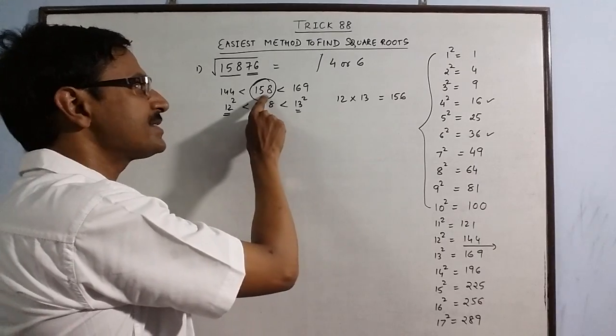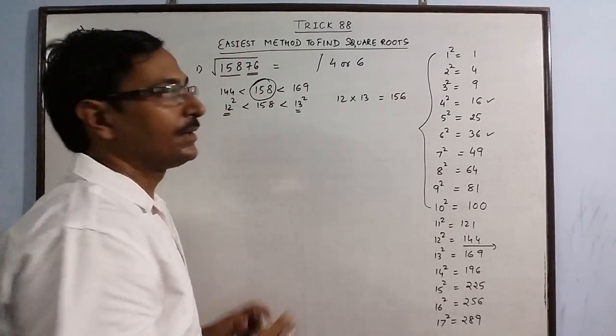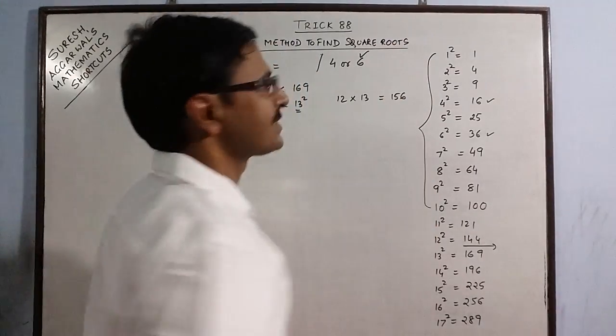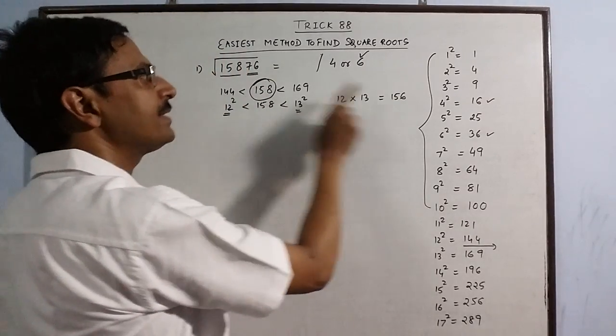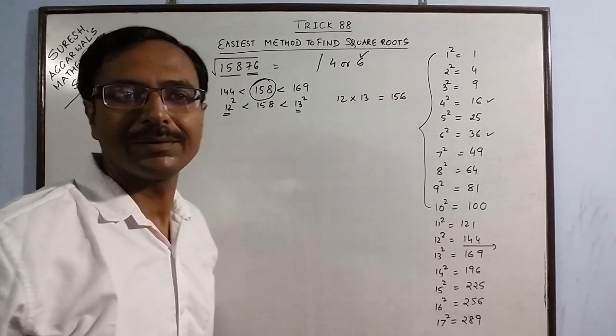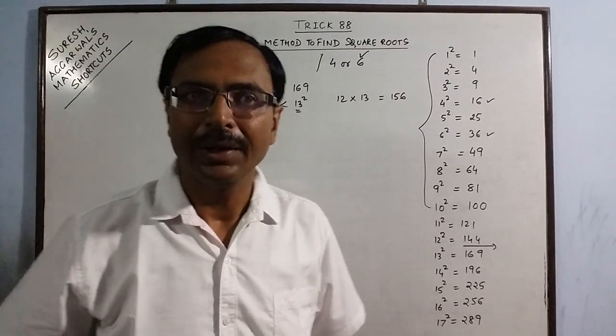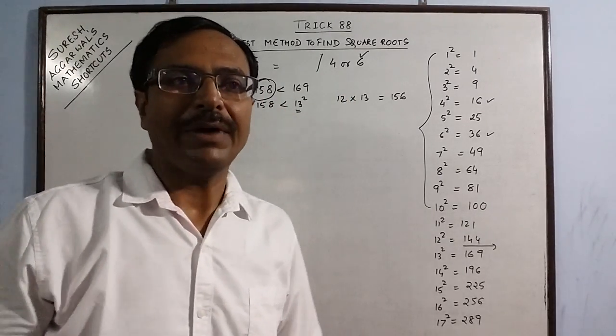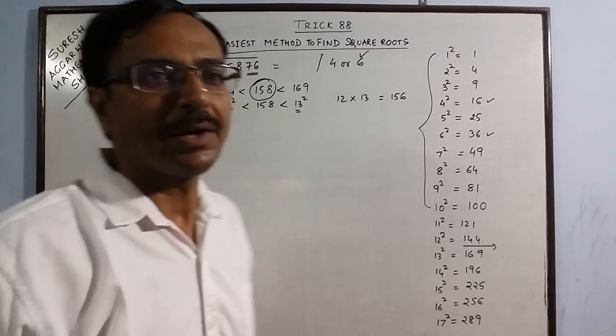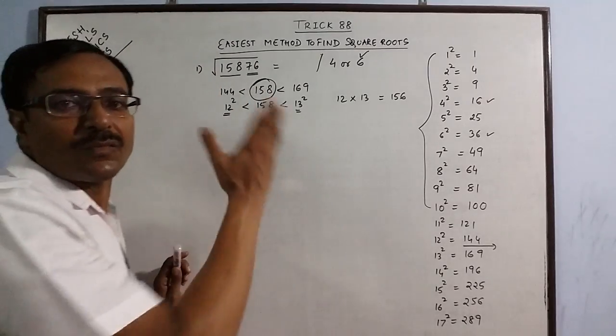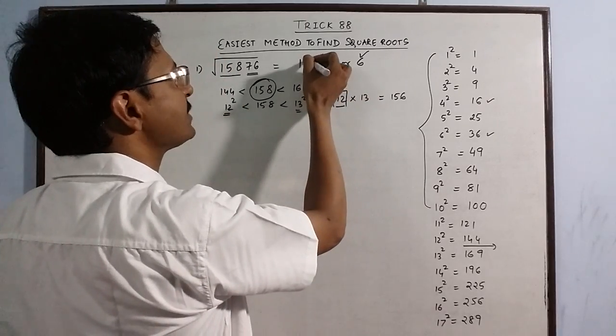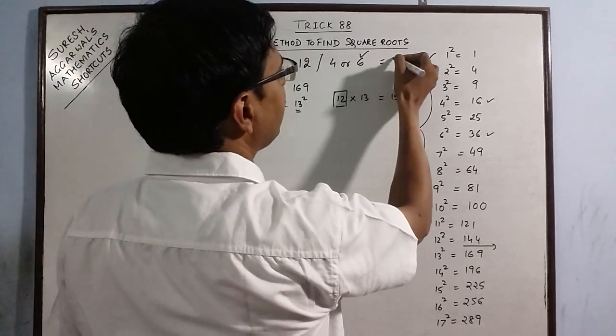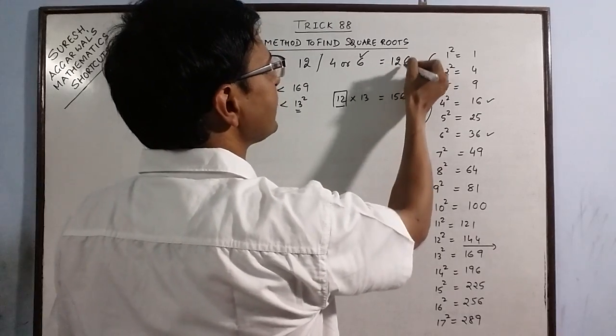So if this number is greater than this product, then you take the greater number 6. If this number is smaller than this, then you take the smaller number. This is the rule you have to follow. And for finding the other part of the answer, you have the smaller number as 12. So this part will be 12. So your final answer will be 12 followed by 6, which is 126.